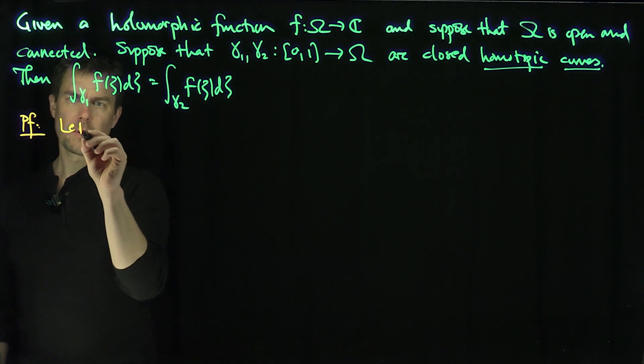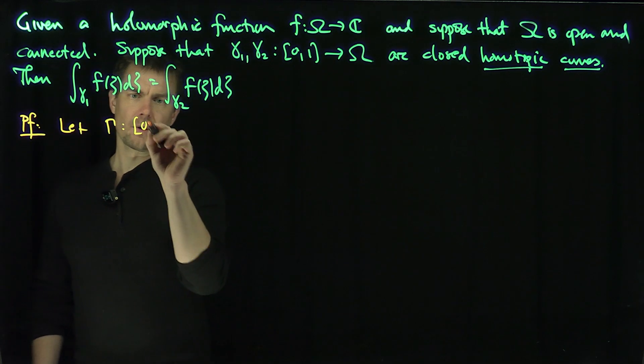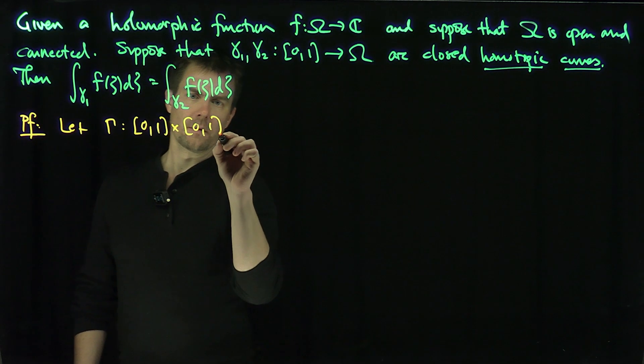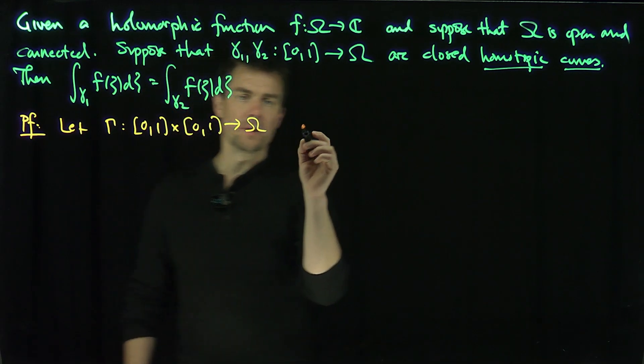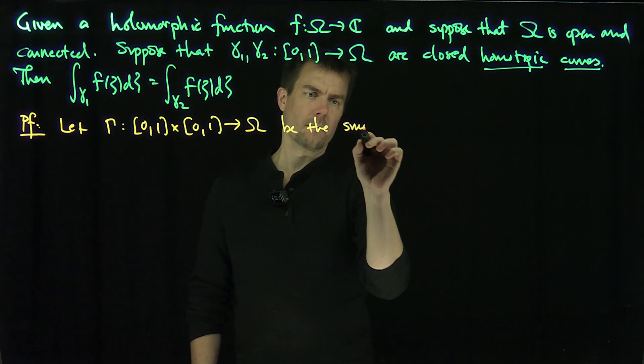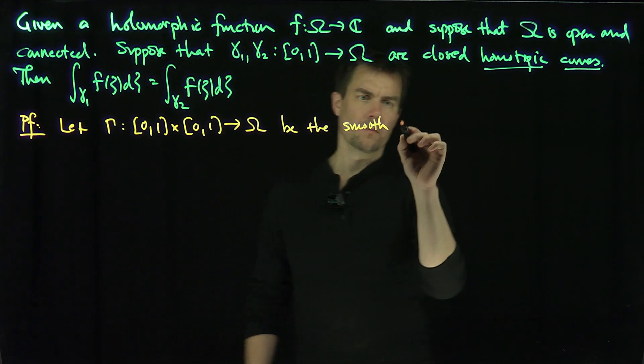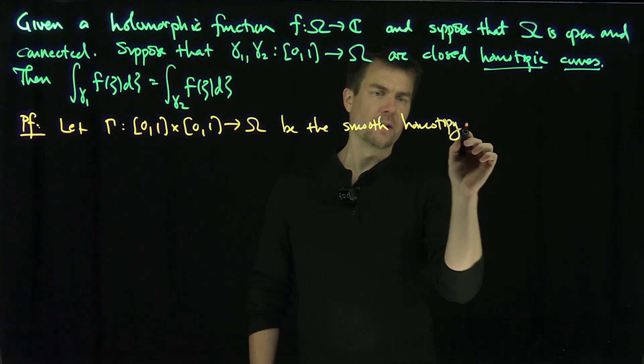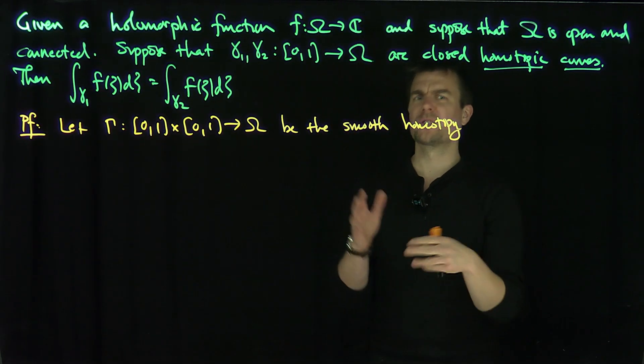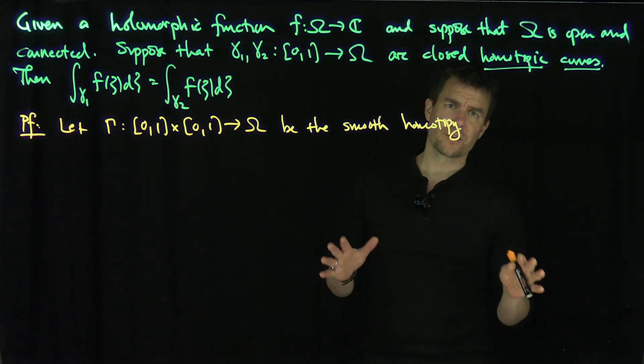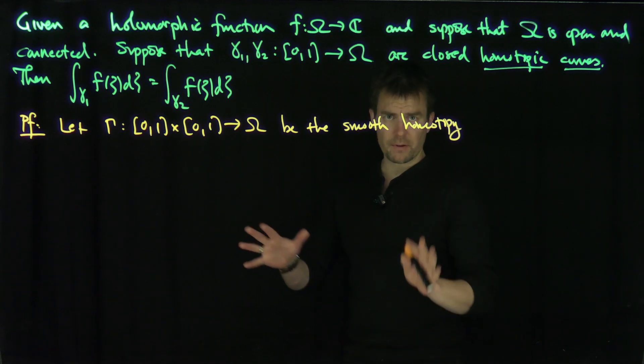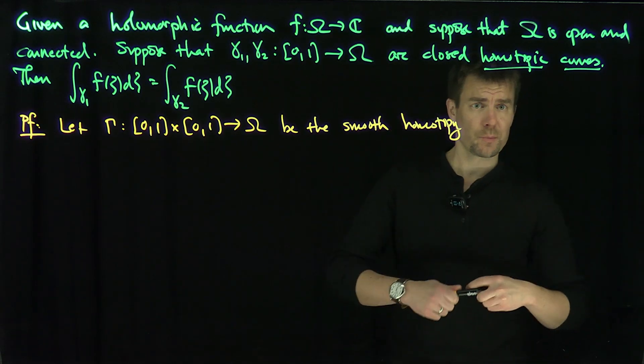Suppose Gamma mapping [0,1] cross [0,1] into omega be this smooth homotopy. In general, homotopies are just continuous, but the proof that I'm going to give is much simpler than the proof with just a strictly continuous homotopy. There's no covering, no polygonal connectedness. It's much easier to get the flavor of the Cauchy's theorem in this case, in the case of the smooth homotopy.